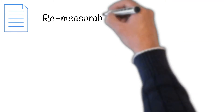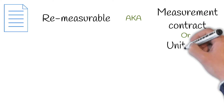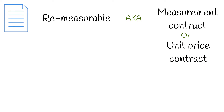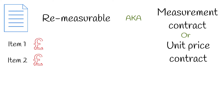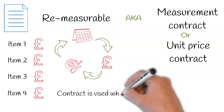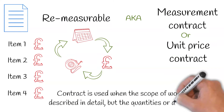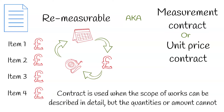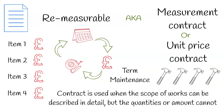Next, we have re-measurable contracts, otherwise known as measurement contracts or unit price contracts. Under this contract, payment is made against an agreed schedule of rates. Each month, a valuation of work is undertaken using the agreed schedule of rates and site measurements. This contract is used when the scope of works can be described in detail, but the quantities or amount cannot. For example, under term maintenance contracts, the maintenance work required may be fairly repetitive and therefore easy to cost for, however the amount of work required is unforeseeable. This contract type may also be appropriate when the design for a project contains insufficient detail for a bill of quantities to be produced.